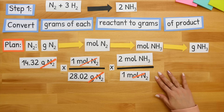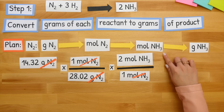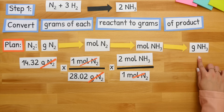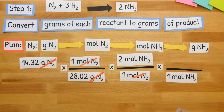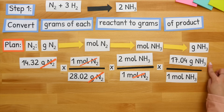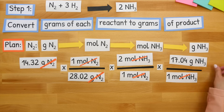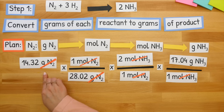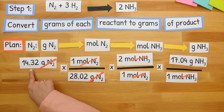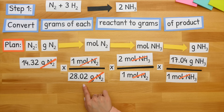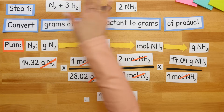Now that our moles of N2 have canceled, we're at moles of NH3. Our last step is to go from moles of NH3 to grams of NH3 — whenever we go from moles to grams, we use the molar mass. We'll align moles of NH3 across from each other and put our molar mass of NH3 on top. The moles of NH3 will cancel and we'll be left with grams of NH3. After we multiply straight across and divide by 28.02, we get 17.42 grams of NH3.